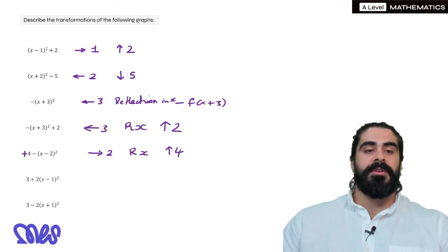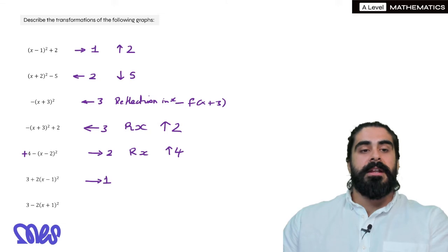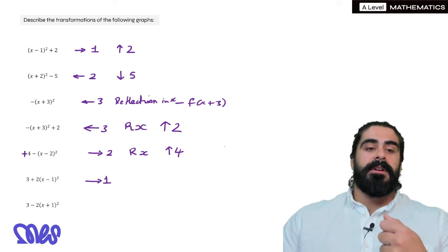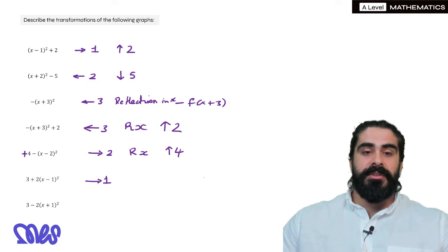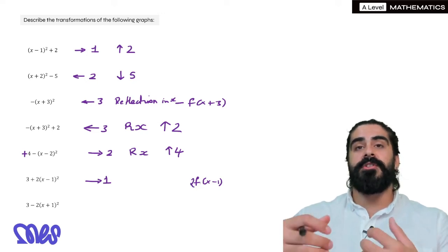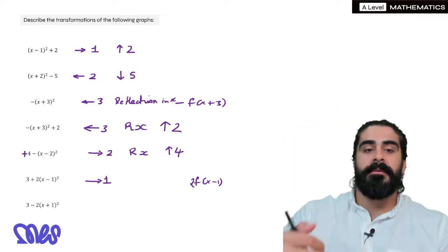3+2(x-1)². So the (x-1)² is going to shift us to the right by 1. Now the 2 in the front, what is that going to do? Similar to before, so the (x-1)² would look like this but then there's a 2 at the front. All that's doing is it's going to multiply all the y values by 2 which basically means a stretch by a scale factor of 2.